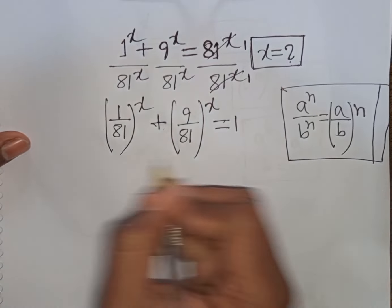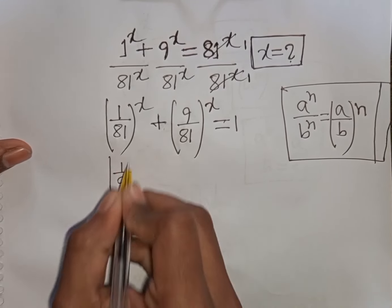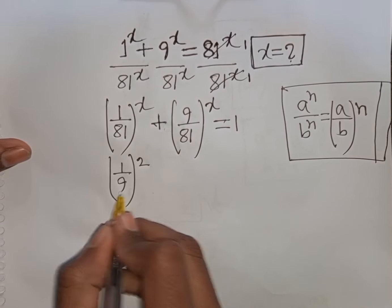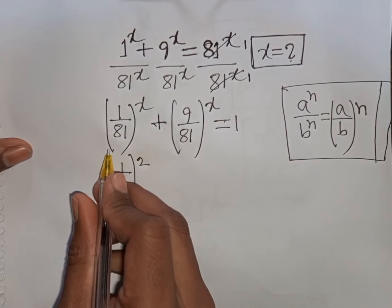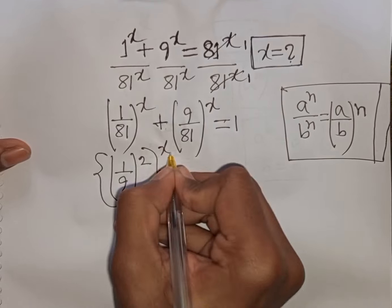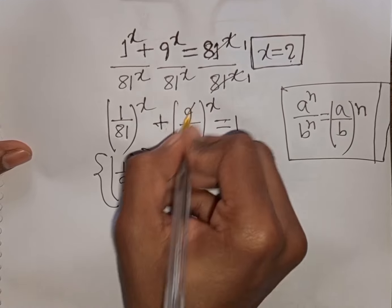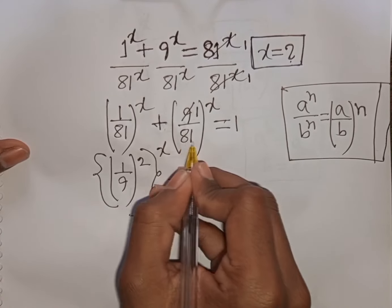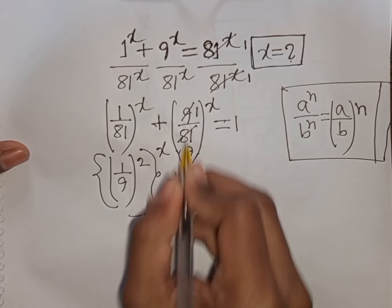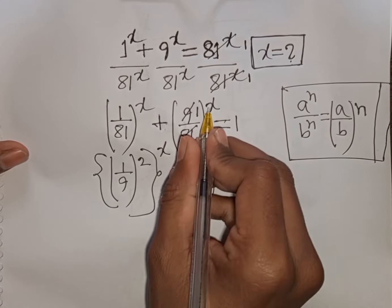Now 1 over 81 can be written as (1 over 9) squared, since 1 squared is 1 and 9 squared is 81. So the first bracket can be written as the second bracket raised to power x. We have (1 over 9) power x appearing twice.